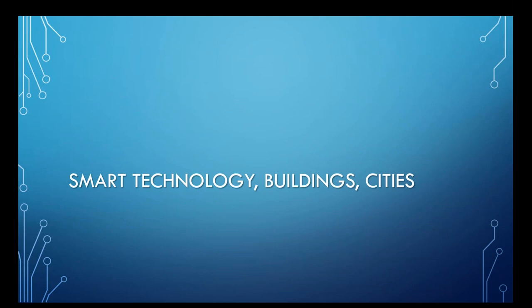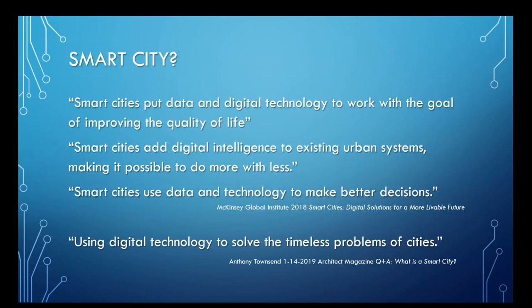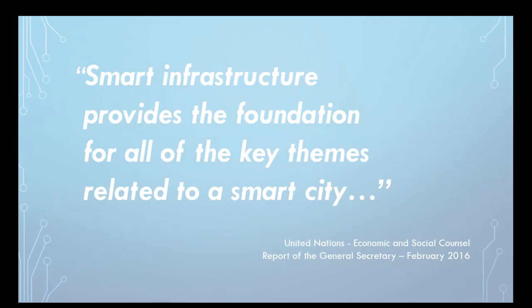Let's talk about smart — smart technology, cities, and buildings. Pulling together several definitions: a smart city uses data and digital technology to improve quality of life on existing urban systems, making it possible to do more with less, and uses data and technology to make better decisions. The best definition, from Architect Magazine, is 'using digital technology to solve the timeless problems of cities.' Our cities are really still individual buildings dropped in the middle of infrastructure — they don't interact — and that's what smart city aims to address.